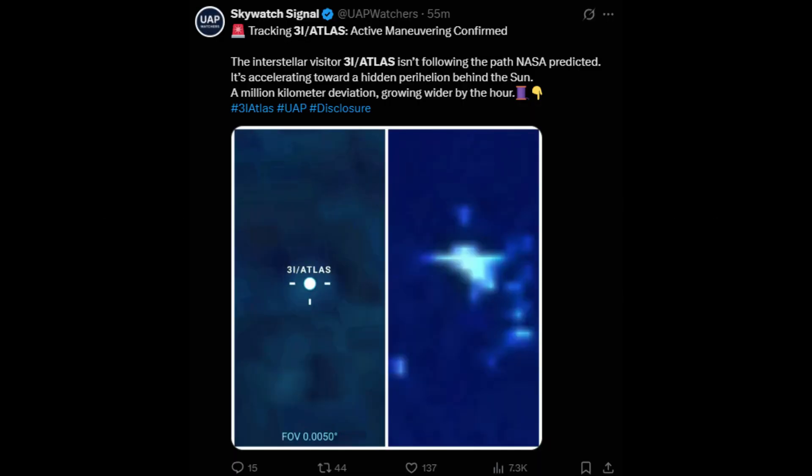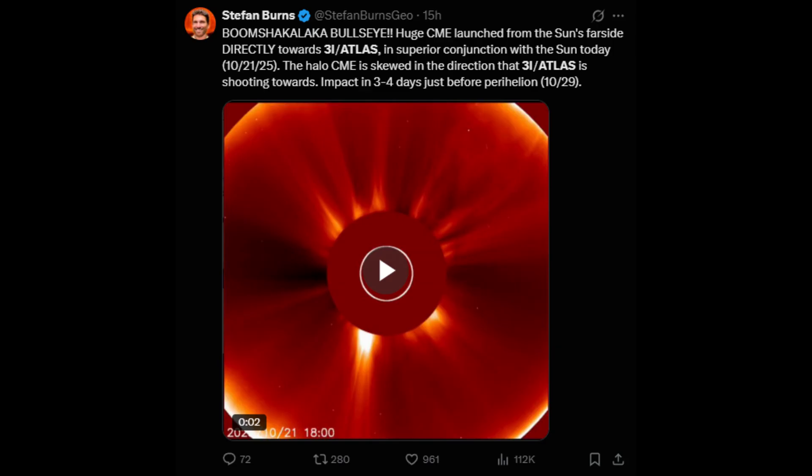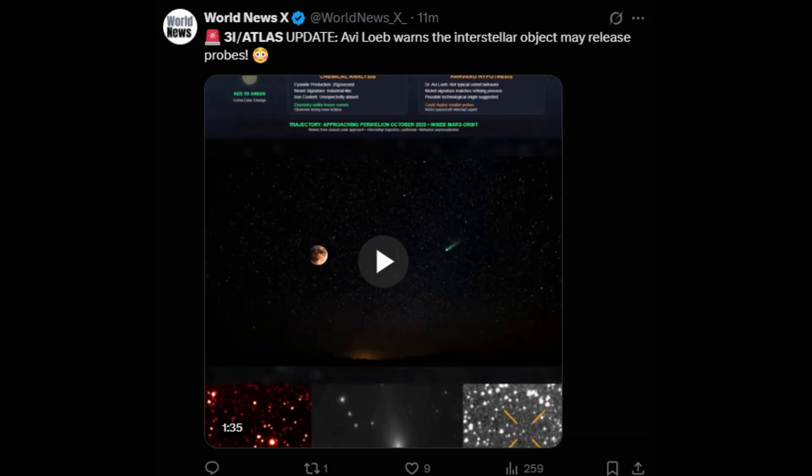The interstellar visitor 3i/Atlas isn't following the path NASA predicted. It's accelerating toward a hidden perihelion behind the Sun, a million kilometer deviation growing wider by the hour. A huge CME launched from the Sun's far side directly towards 3i/Atlas in superior conjunction with the Sun today. The halo CME is skewed in the direction that 3i/Atlas is shooting towards. Impact in three to four days just before perihelion. The new 3i/Atlas image is insane: a Death Star type shape, centaur-like patterns, and details that defy explanation. Whatever this is, it's not ordinary. Avi Loeb warns the interstellar object may release probes.